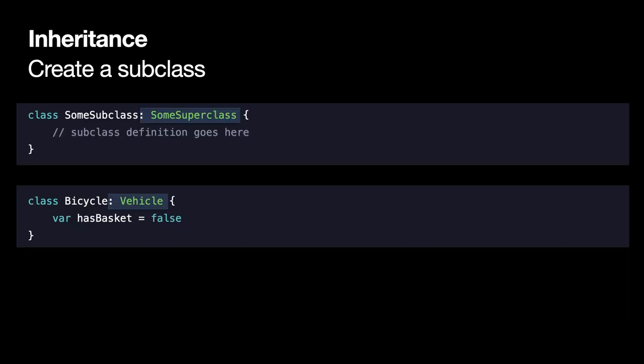If we want to create a subclass of Vehicle, we gain the ability to inherit its properties and attributes. Let's name our superclass 'someVehicle', and the subclass Bicycle, which inherits from Vehicle. Bicycle has just one additional property: 'hasBasket'. So this is how we differentiate a subclass from its base class.